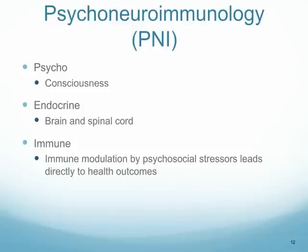The connection between our mental and psychological state and our ability to have normal immune function has been studied in many ways. One of the sciences examining this connection is called psychoneural immunology, which looks at the conscious effect of our brain on our brain and spinal cord and on immune function in the body. It studies how the way we think can actually affect the hormones that are released and our immune function — explaining why people with a positive outlook may experience better outcomes, even from serious illness like cancer.